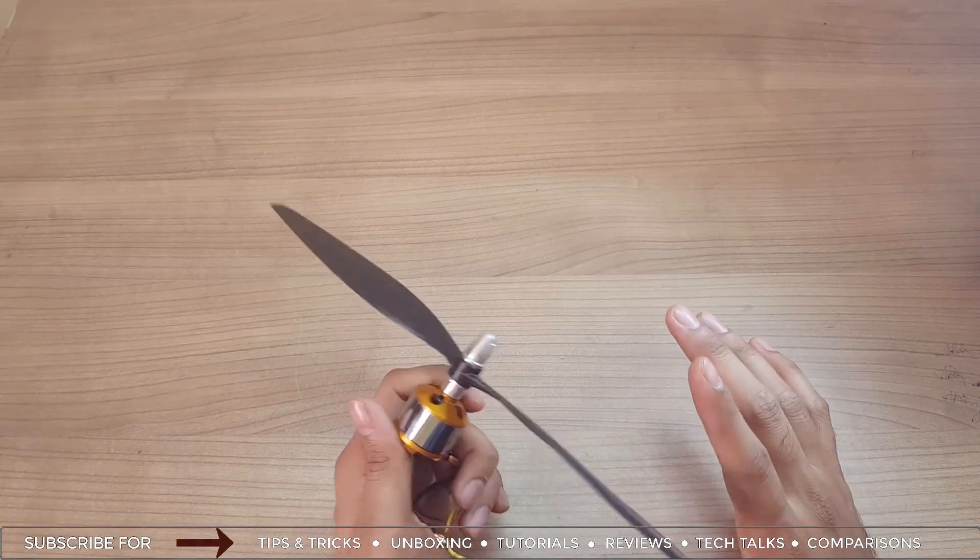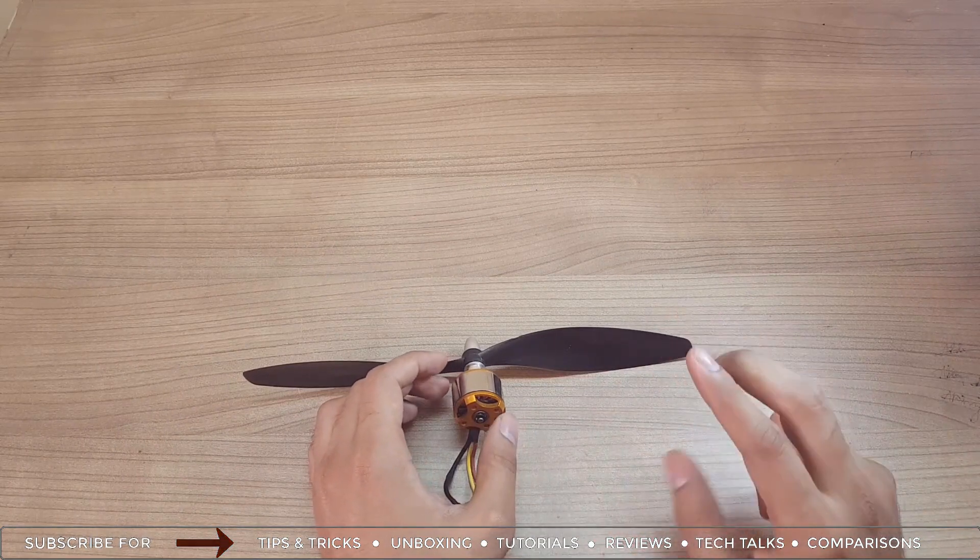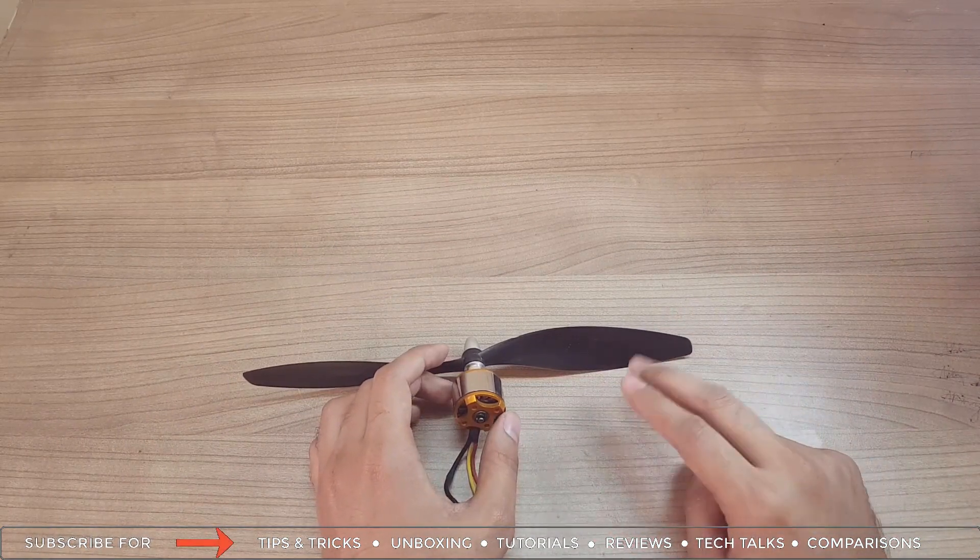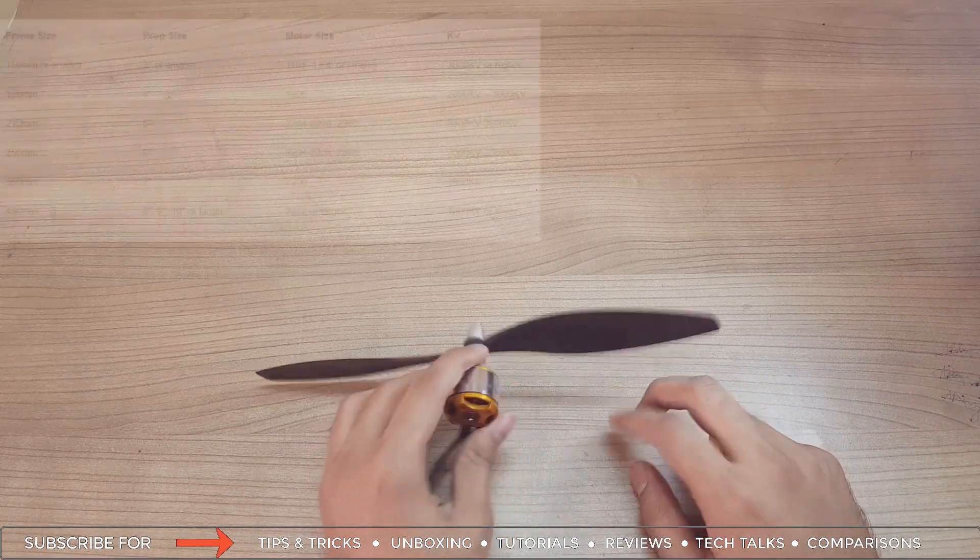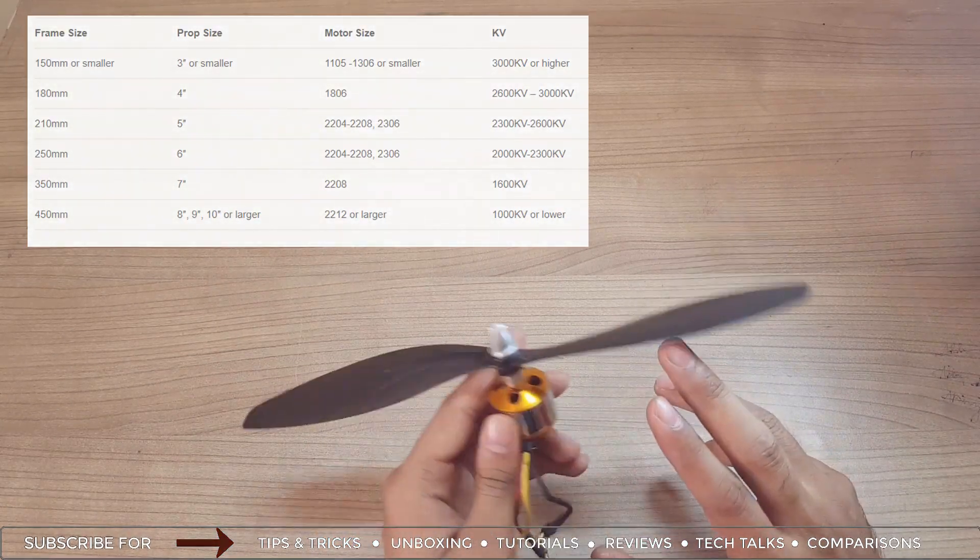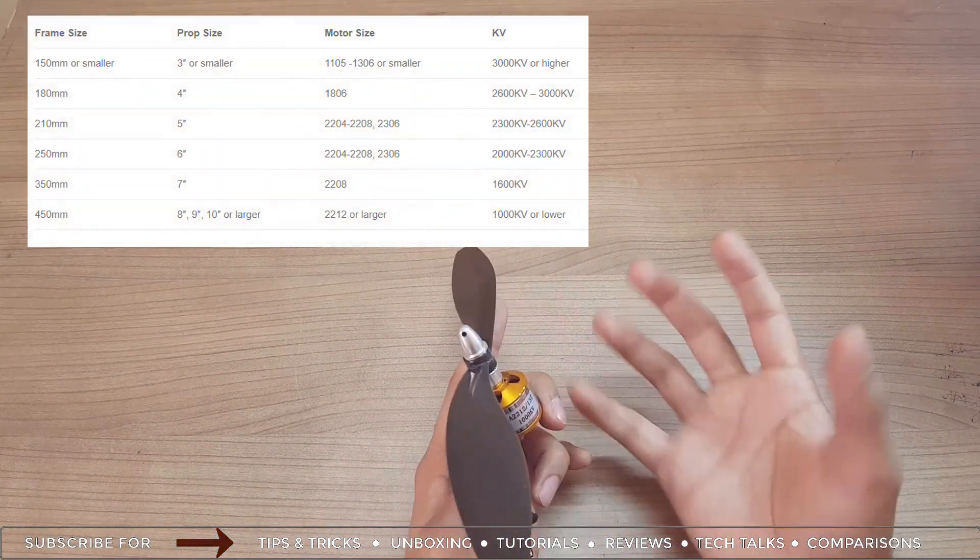Here comes the summary of this video. The thrust generated by the motor should be at least twice the weight of the quadcopter. The size of the propeller should be 10 inches or 8 inches for 1200 or 1400 KV.